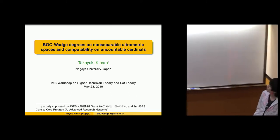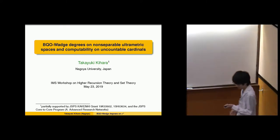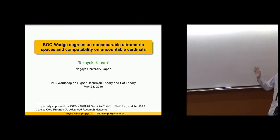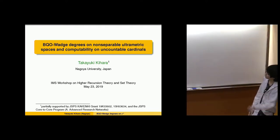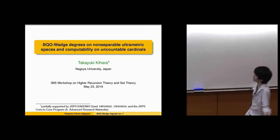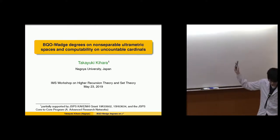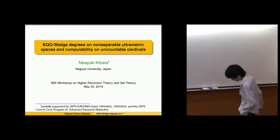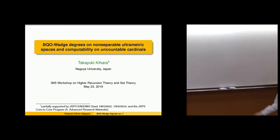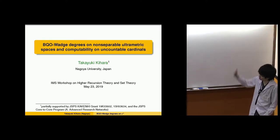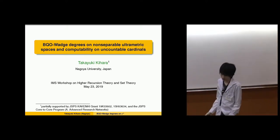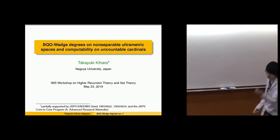I wrote non-separable ultrametric spaces in the title, but in this talk I will concentrate on kappa-omega for uncountable cardinal kappa. Kappa-omega is a typical non-separable complete ultrametric space. I will only talk about kappa-omega or omega-omega in this talk.